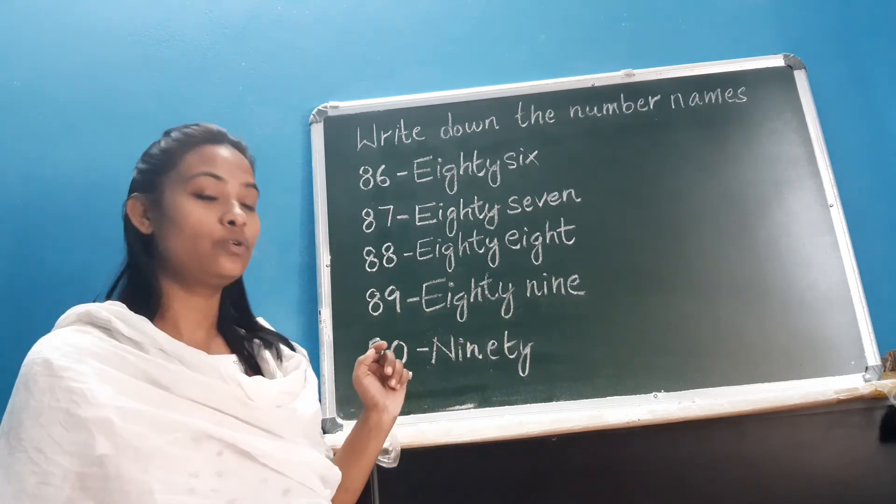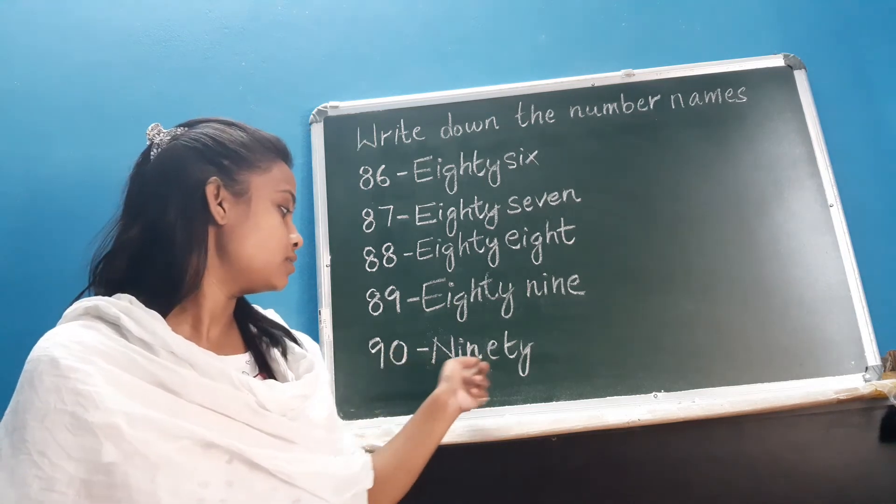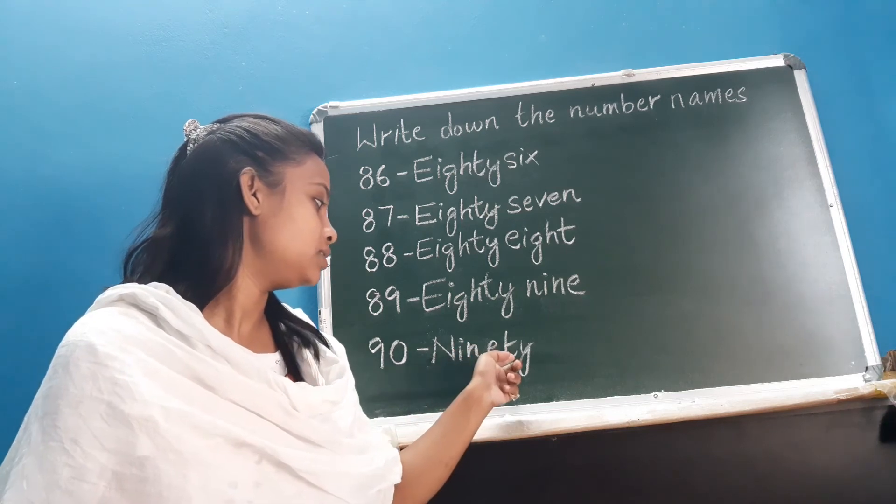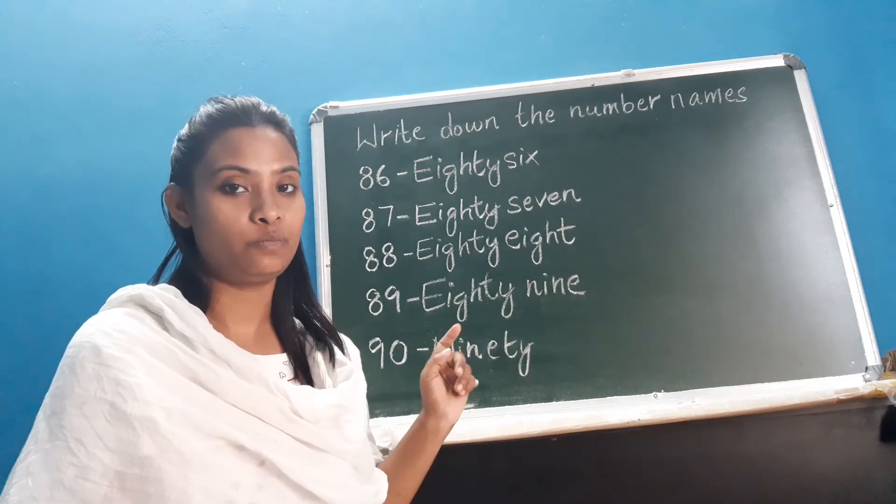Now last one, 90, 90. Okay. And this is the spelling of 90. N, I, N, E, T, Y, ninety. I repeat.